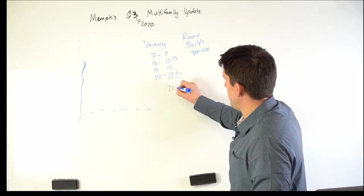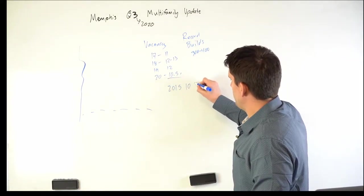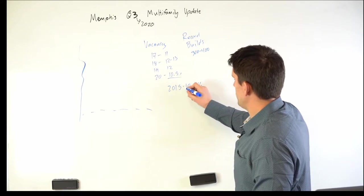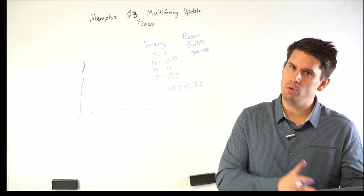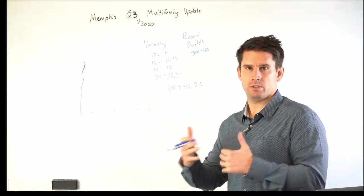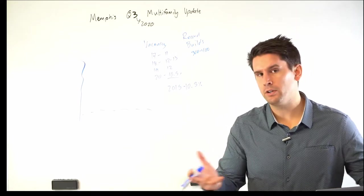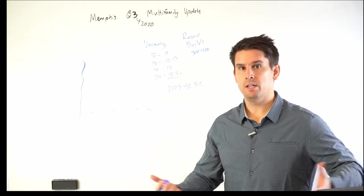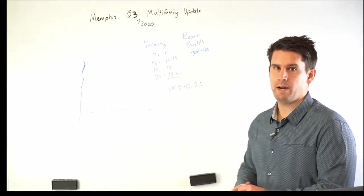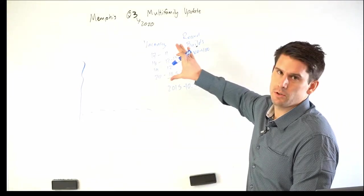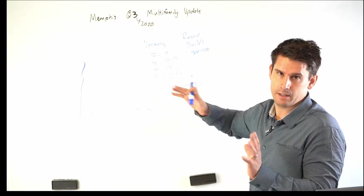But the average vacancy through 2017 was about around 11%, and then 2018, 12% to 13% range, 2019 we got down to 12%. So for 2020, we are back at 10.5%. So the lowest when this vacancy was at this point was back since 2015 at a 10.5% vacancy.